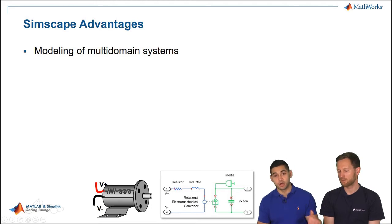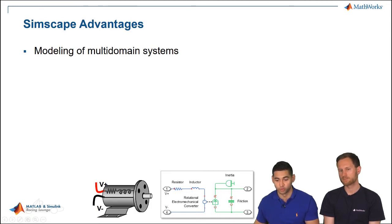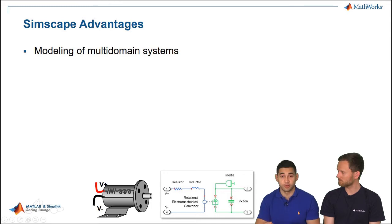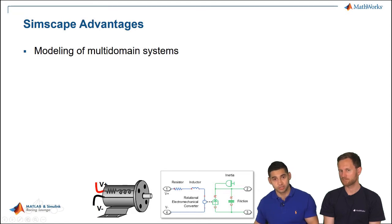Simscape implements a physical modeling approach: instead of using blocks and signals, you use components and physical connections. In this simple motor example, the model has a voltage source, resistance, inductance, a conversion from the electrical domain to the mechanical domain, and then an inertia and friction for rotational motion. This looks very much like a hand-drawn schematic. An advantage is that it enables you to model different domains — electrical shown in blue, mechanical shown in green — in a single model.